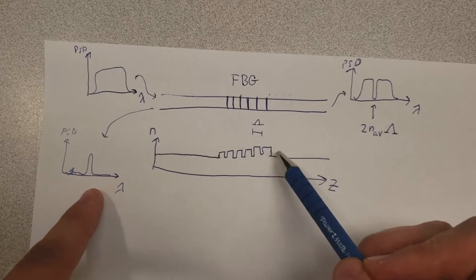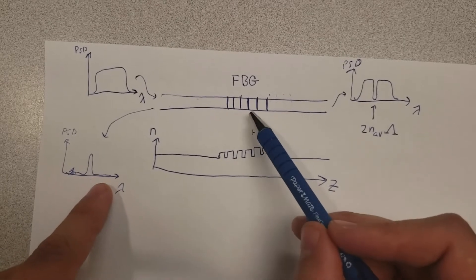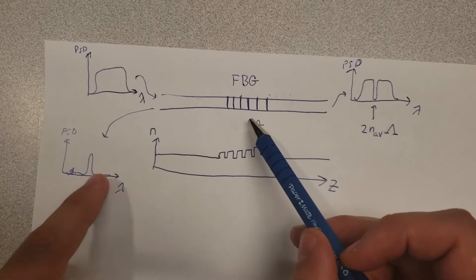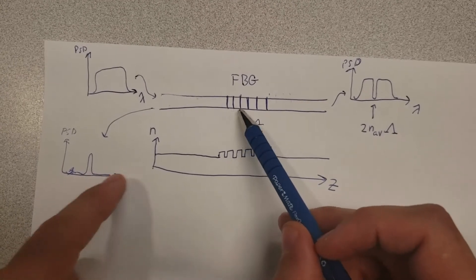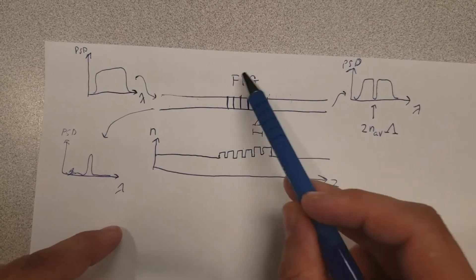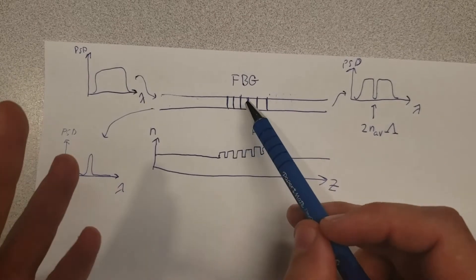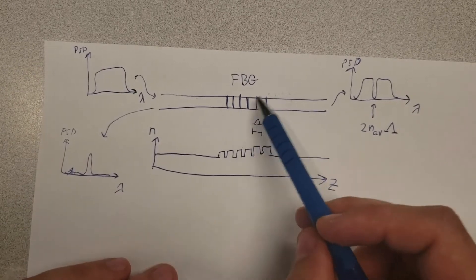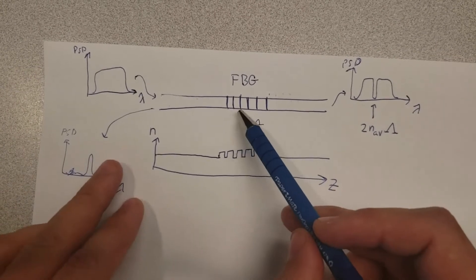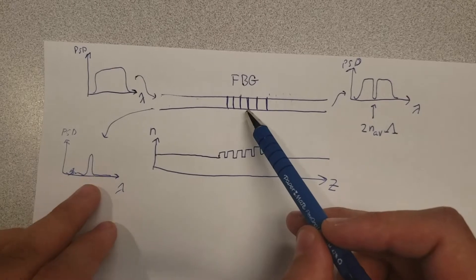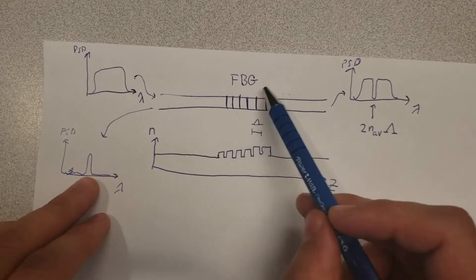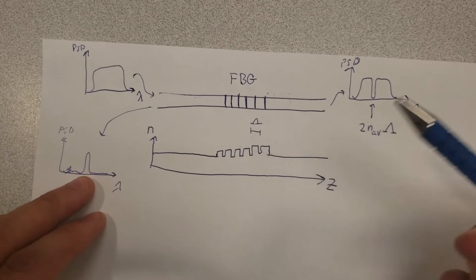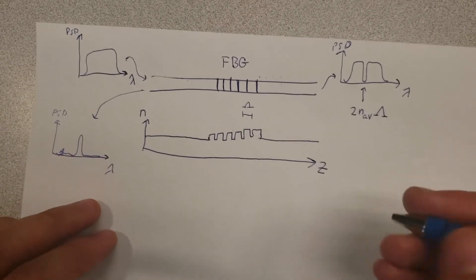If you perform a calibration between known temperatures and known wavelength positions, you can install the fiber Bragg grating in a structure whose temperature you want to monitor and then simply look at where the central wavelength is to infer the temperature.